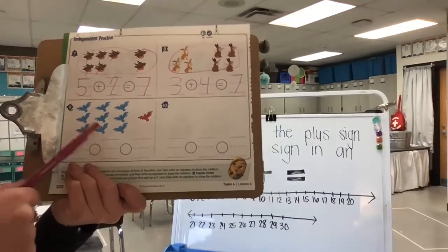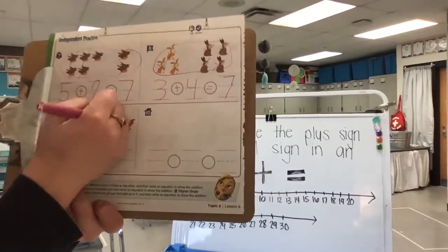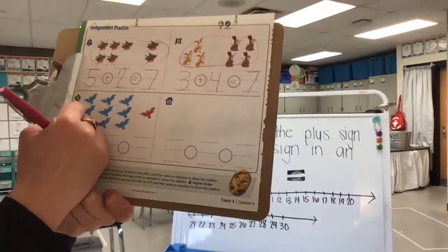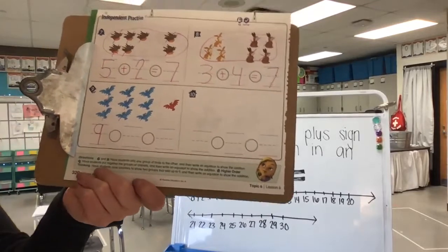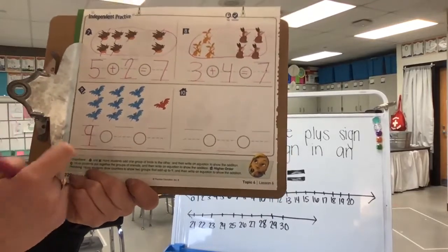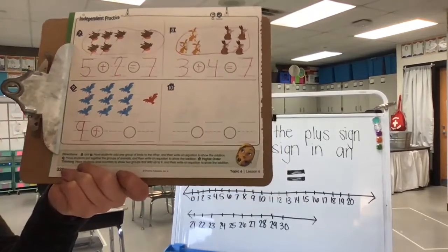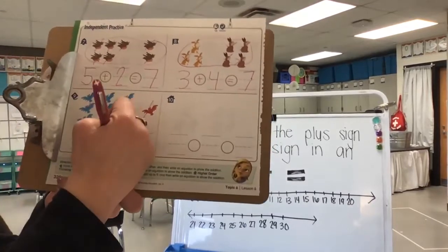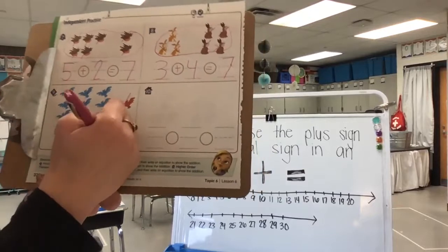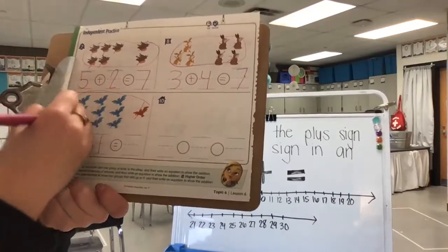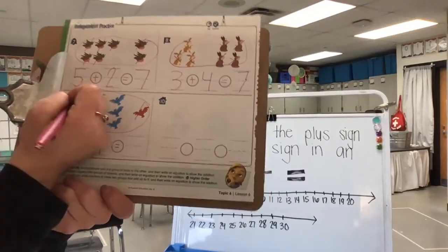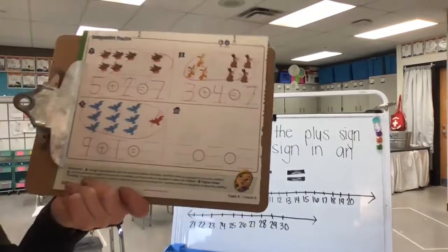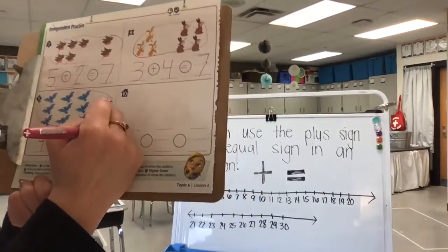Now let's look at our blue and red birds. Count our blue birds first: 1, 2, 3, 4, 5, 6, 7, 8, 9. Write a nine on the first line — first a circle, then a line. We're putting them together, so what symbol do I need? The plus sign or addition symbol. Now count the other group: just one. Write a one on the line. Put the equal sign and circle both groups to show all together. Count: 1, 2, 3, 4, 5, 6, 7, 8, 9, 10. Nine add one equals ten all together.